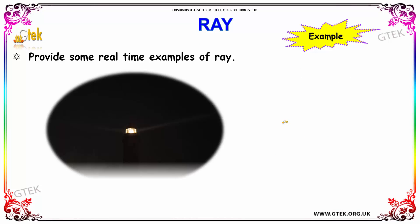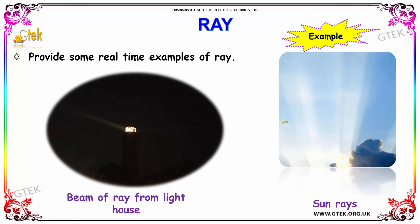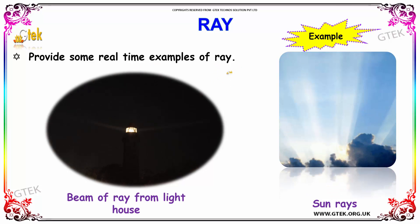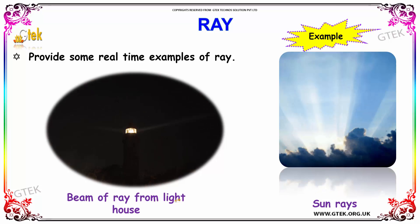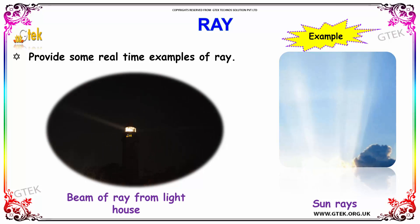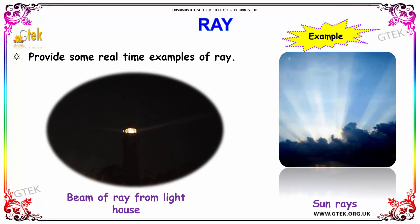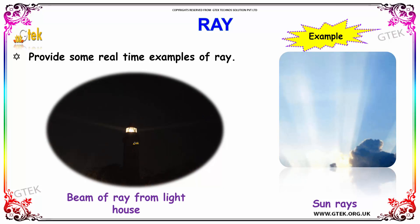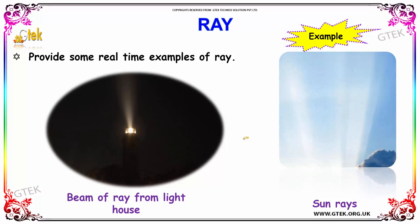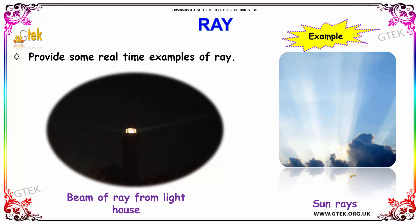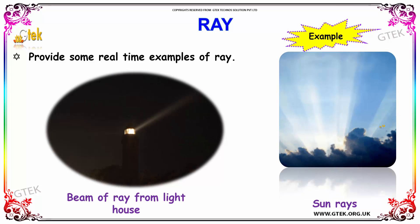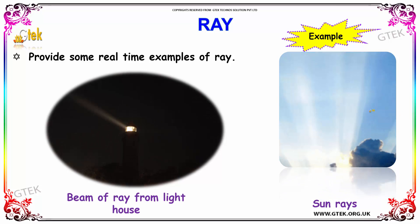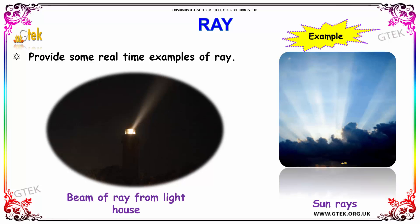Here we have an example with real-time examples of rays. The beam of light from a lighthouse starts from one point and extends indefinitely in one direction. Sun rays start from the sun and extend indefinitely into space. These are some real-time examples of rays.